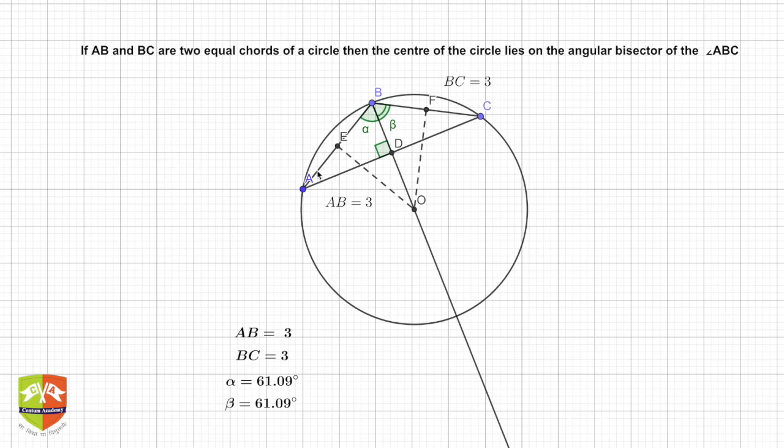Now we have drawn a circle that is passing through the given points. What are the given points? So we have drawn AB as three units and BC as three units.